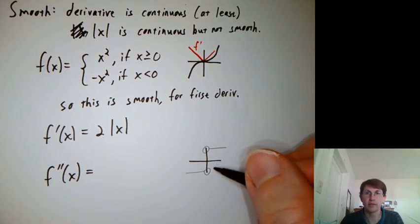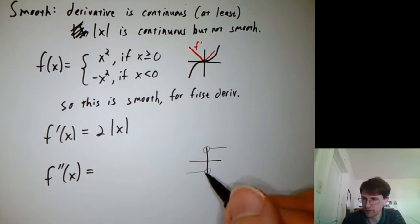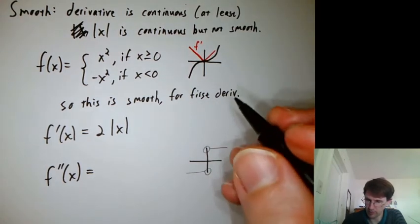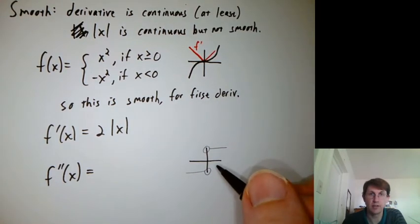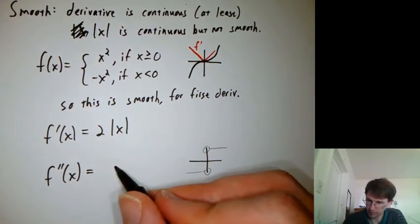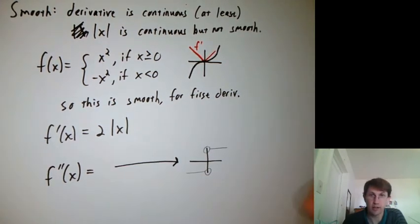You could call this a step function. It's not the unit step function or the Heaviside step function because it's negative for a while. So it's basically the sign function, S-I-G-N, but it's not continuous.